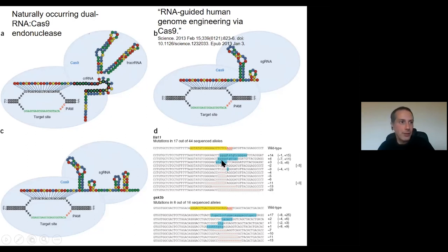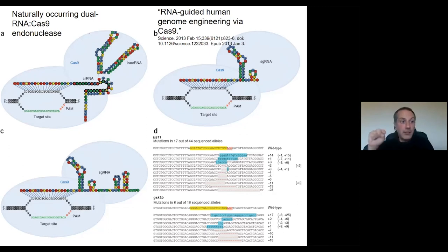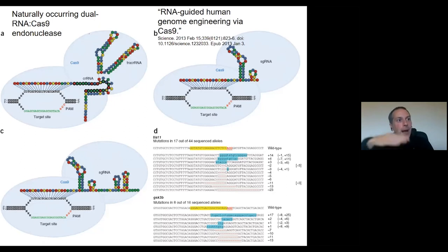This is a mutation. This will be replicated over and over again and transmitted to other cells when cells divide. If this happens in the germline of the organism, it will be passed to the next generation.